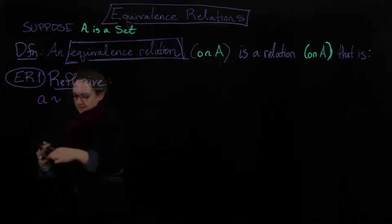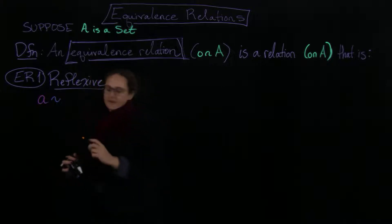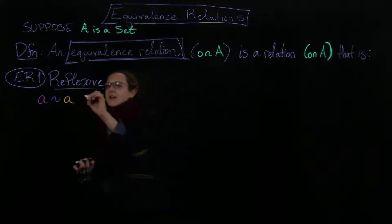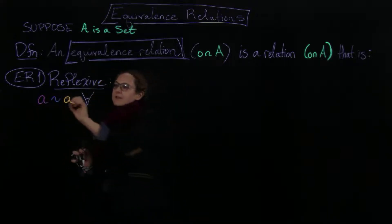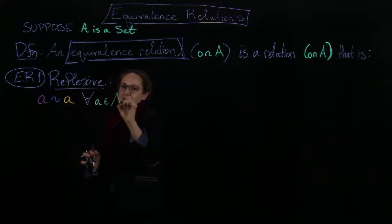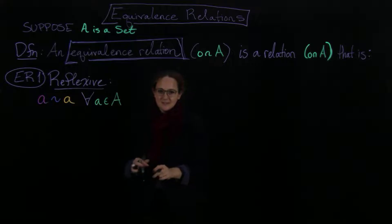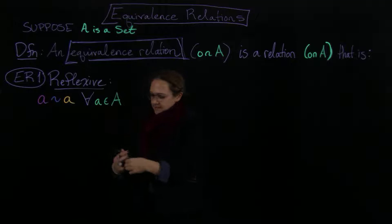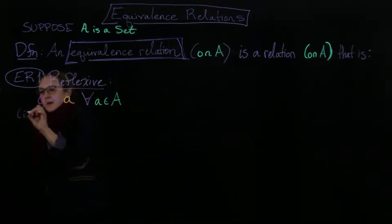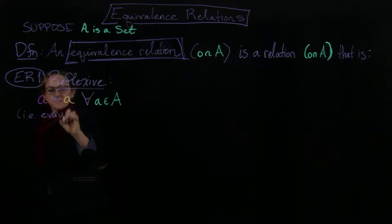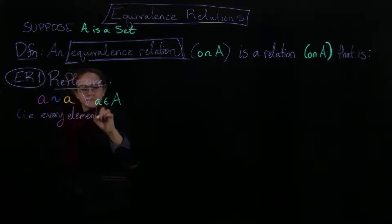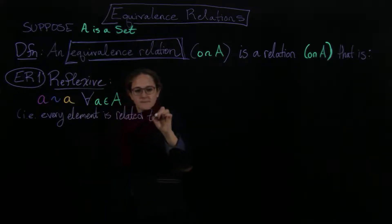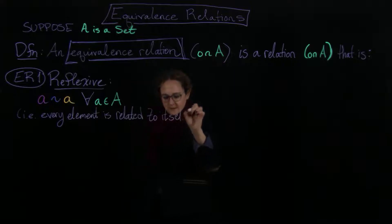If A is always related to A, someone's going to write down the wrong one. Okay, so this is going to happen for all, for every, and this is all the same A. I'm just saying that A is always related to itself. i.e., every element is related to itself.